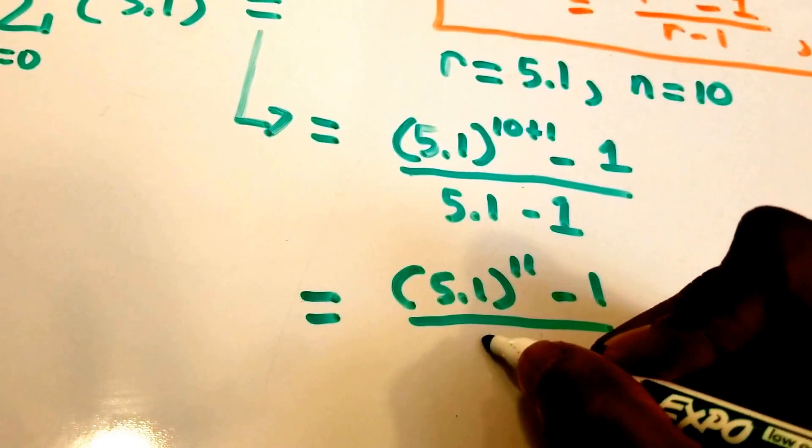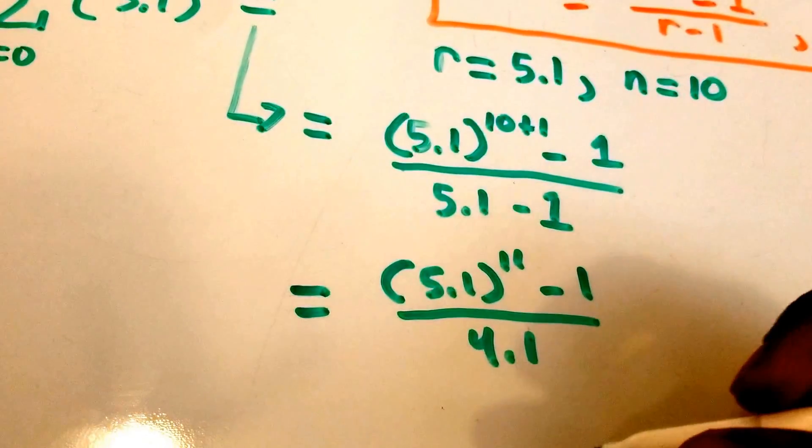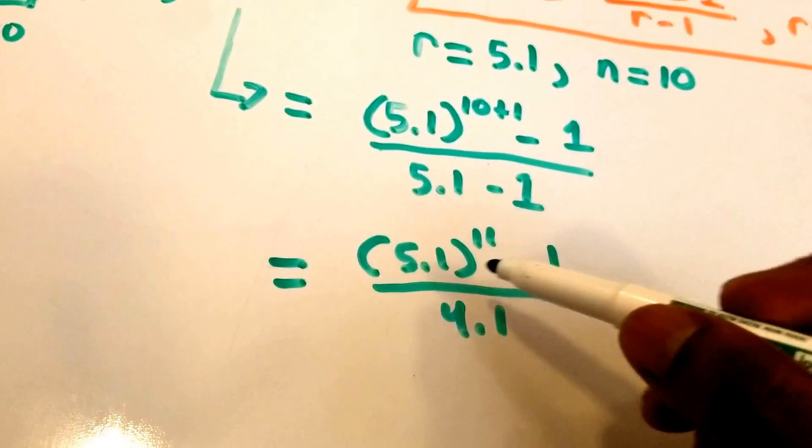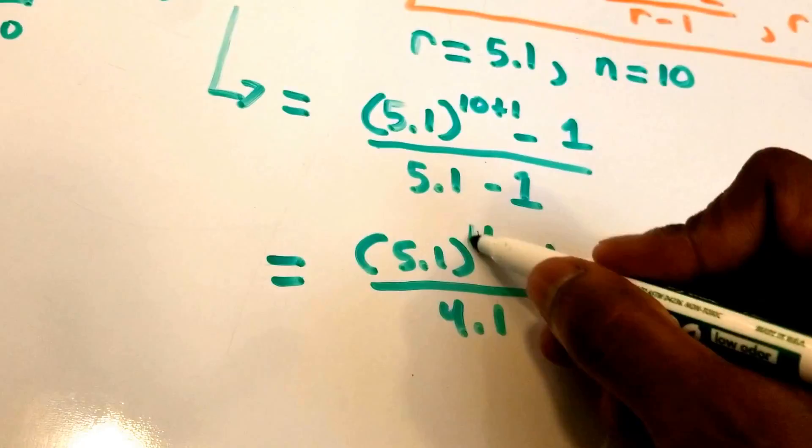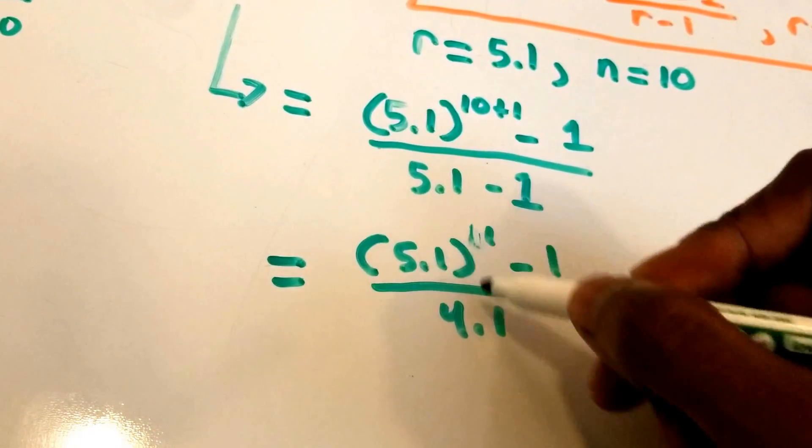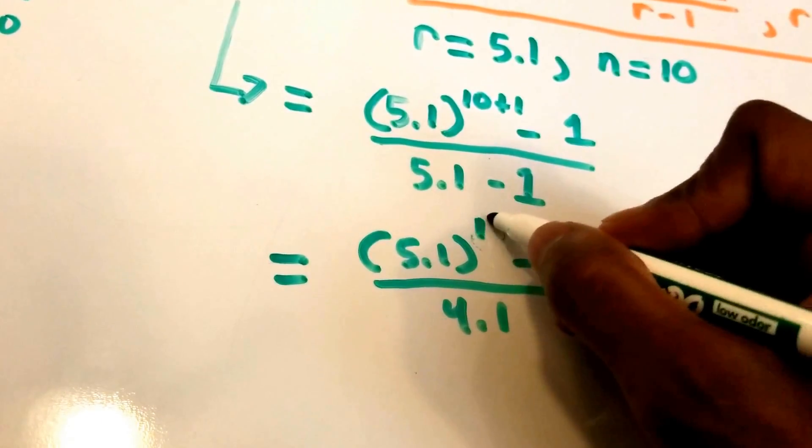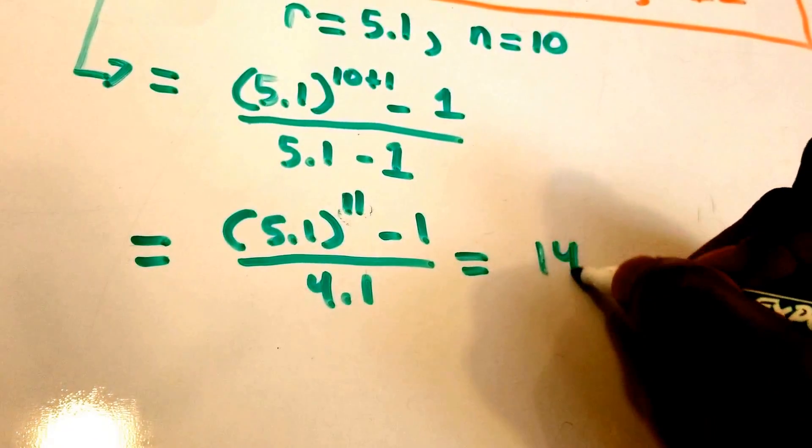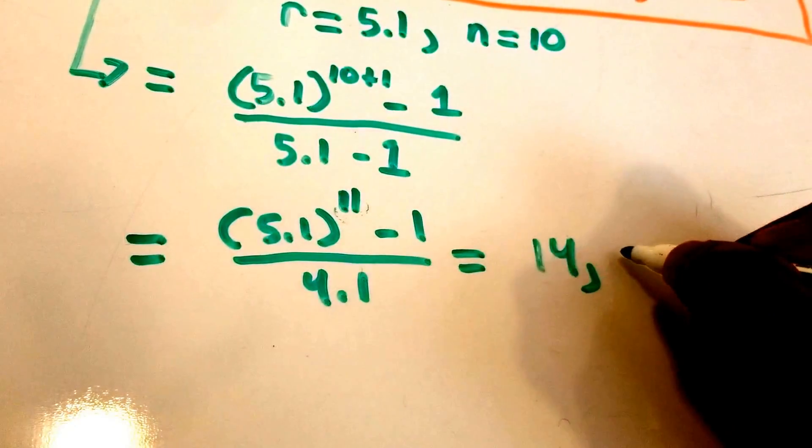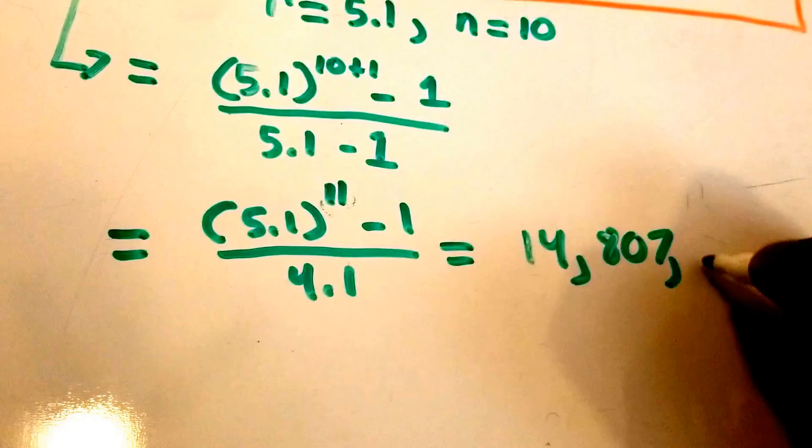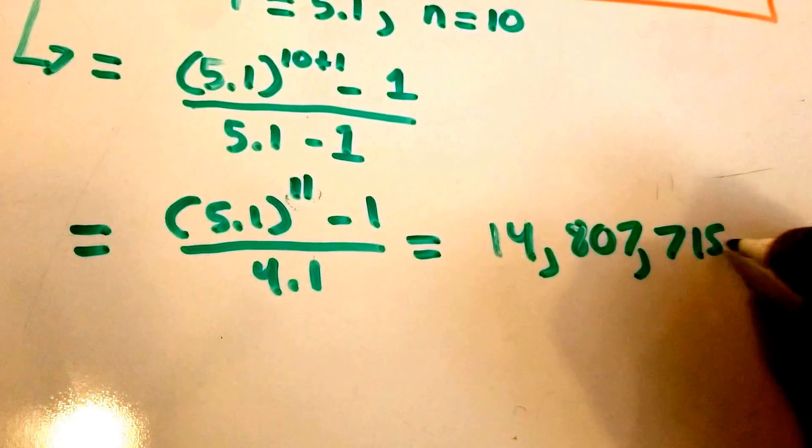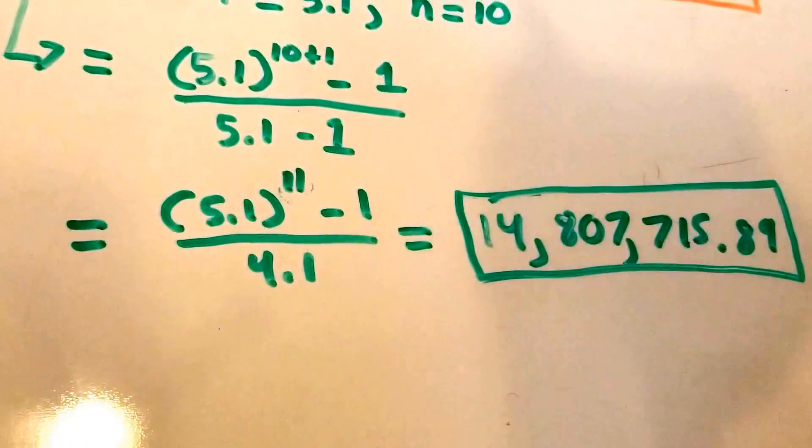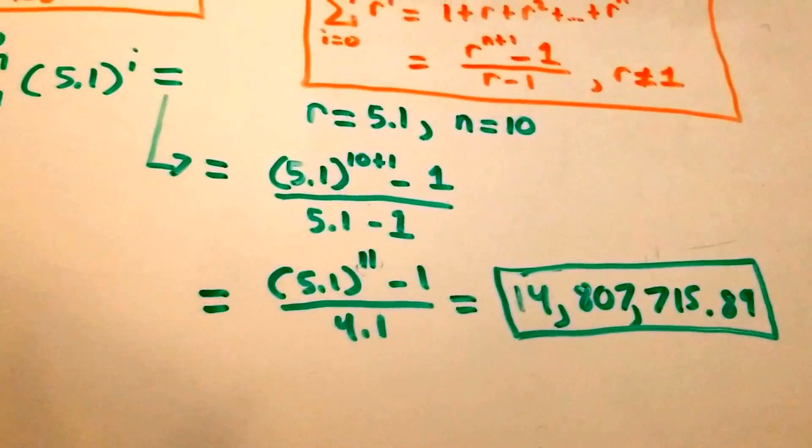So what this all equals is 14,807,715.89. It's a pretty big number - probably should have done a smaller example.